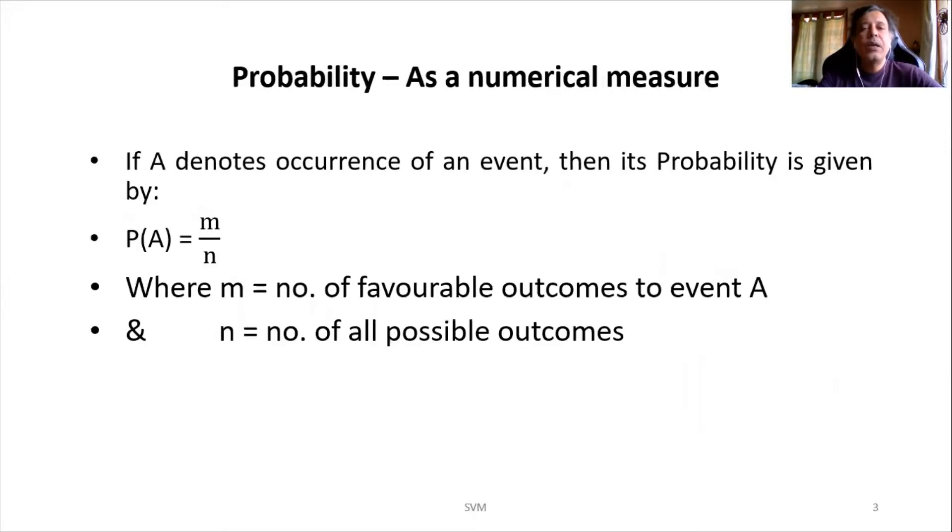So how do we measure probability numerically? Suppose if I consider capital A as an occurrence of a specific event, then we write probability of that as P(A). P(A) is equal to small m divided by small n, where small m is the number of favorable outcomes to that particular event A, and small n is the total number of all possible outcomes.